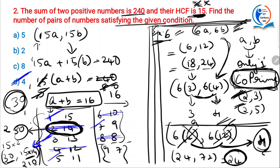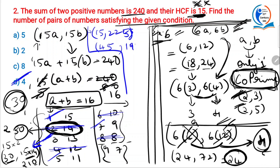They did not ask for the numbers — they asked for the number of pairs. For your convenience: substituting 1 and 15 gives the pair 15 and 225; substituting 3 and 13 gives 45 and 195, and likewise for others. But 4 is the answer. Do not strain yourself calculating the actual numbers unless they ask for them.